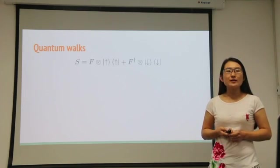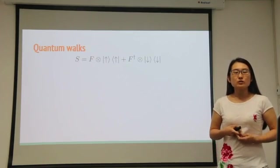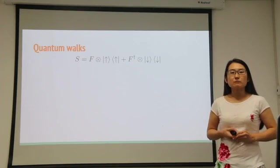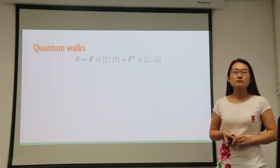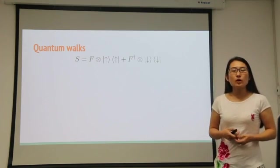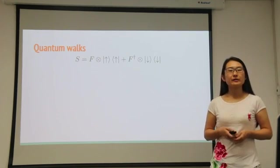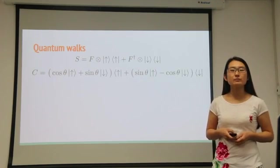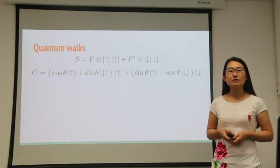Quantum walk propagation requires a conditional propagator S, which dictates the movements of the walker conditioned on the two orthogonal states of the coin, and the coin-flip operator C, which alters the coin state.